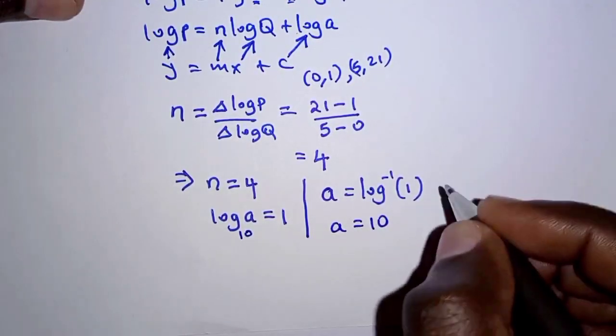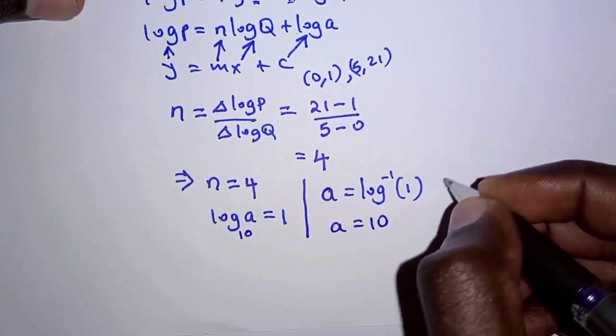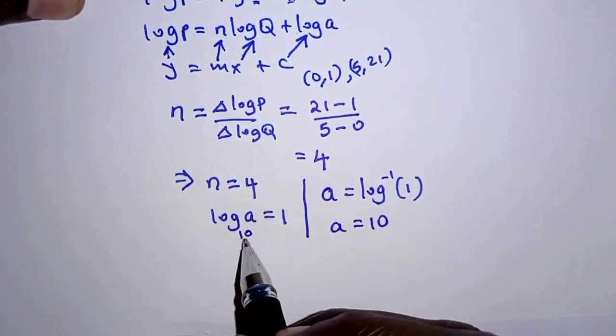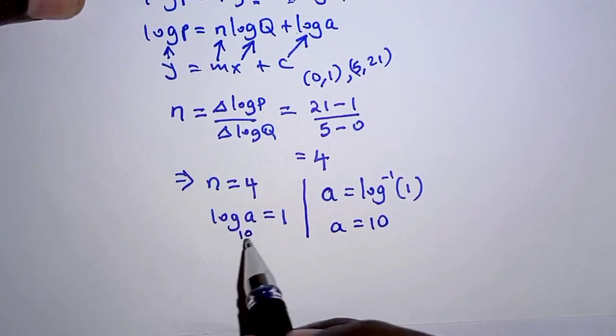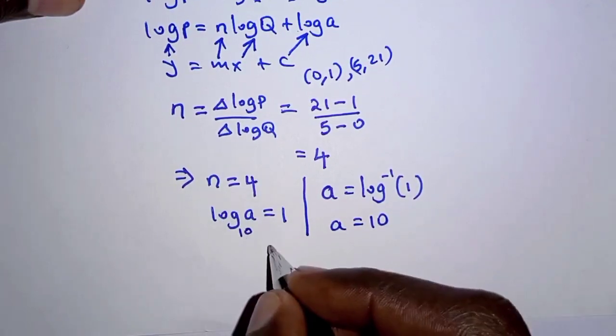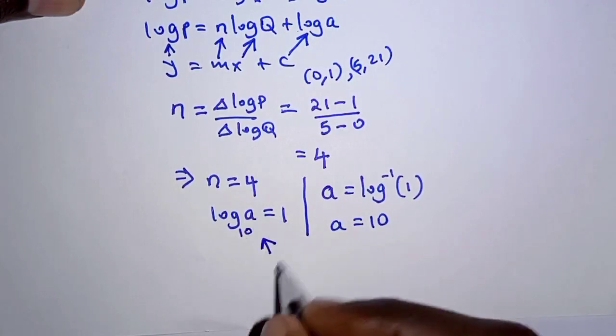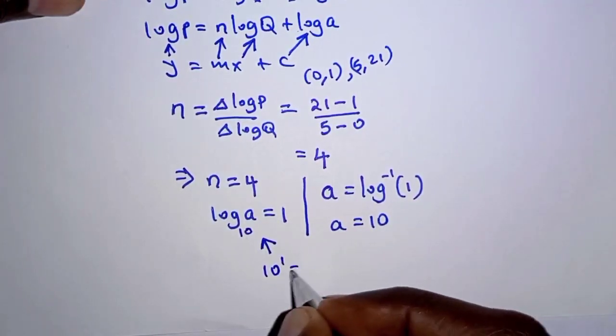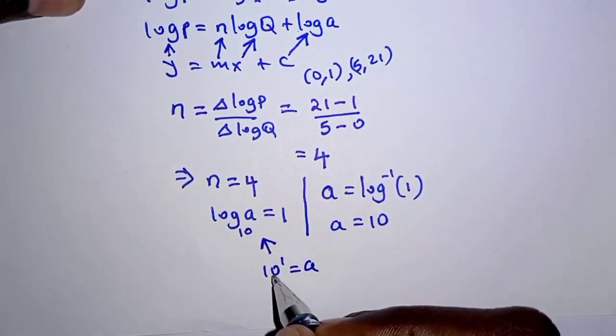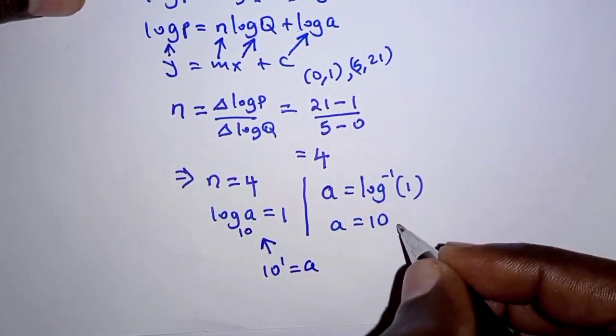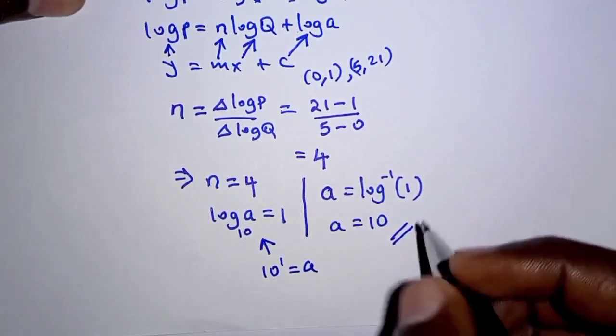And if we don't look for the log inverse even from tables, we can just express this logarithmic notation to index notation. And that is, we will just have 10 raised to 1 is equal to A. 10 power 1 is equal to A. And therefore A is 10. So that is how we obtain the value of A.